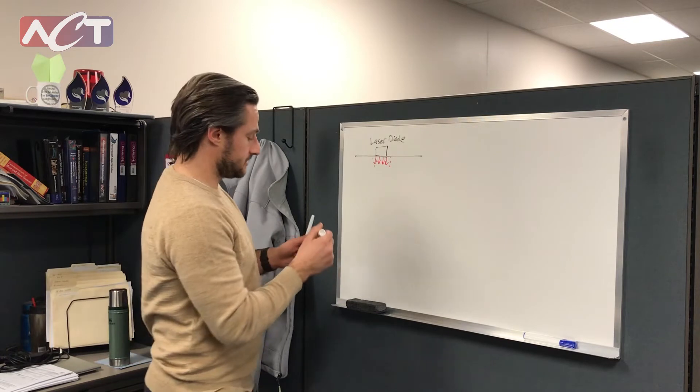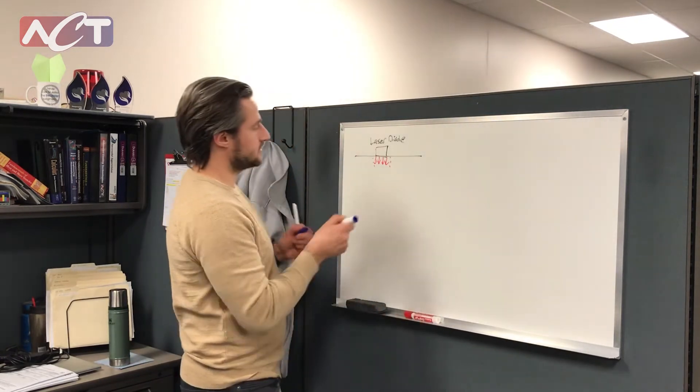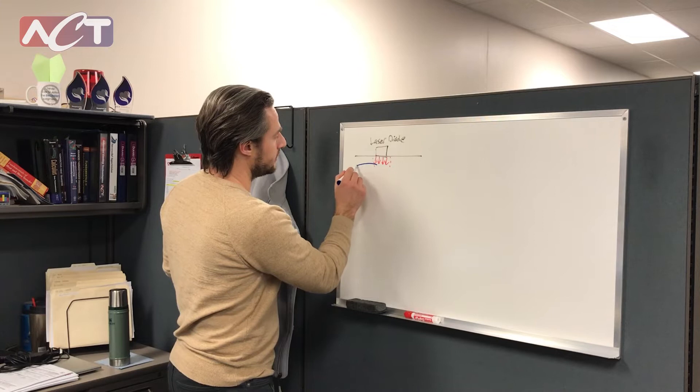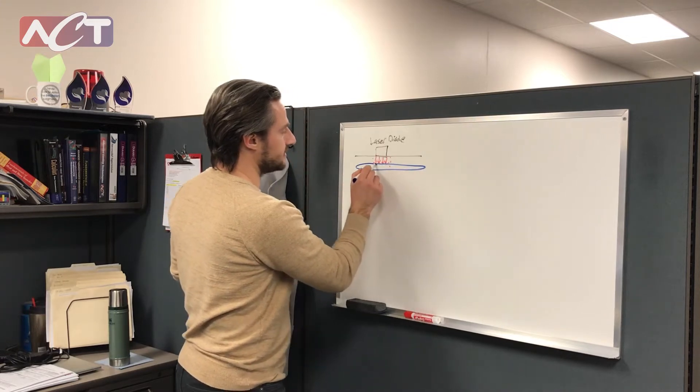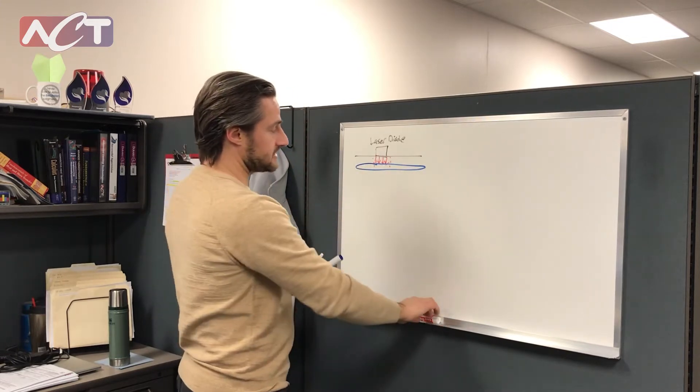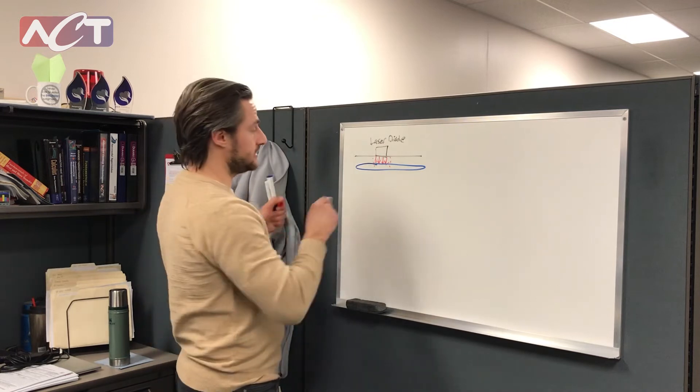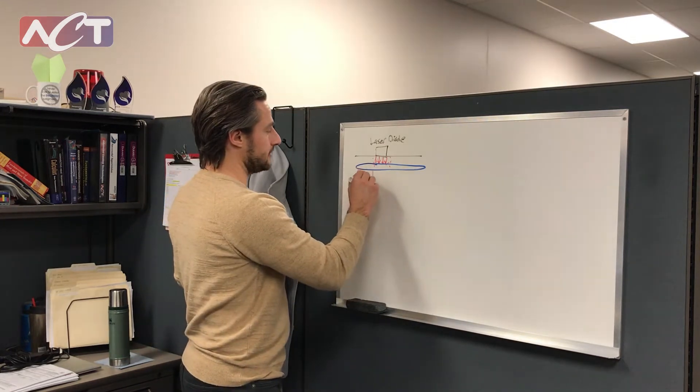One way to deal with this problem is to utilize a product like a heat pipe. So we take this concentrated heat load and embed a heat pipe inside of a base plate so that by the time our cooling solution sees this heat it's distributed over a much wider area.